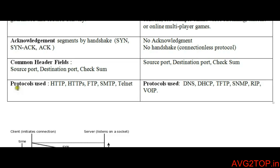Protocols used for TCP include HTTP, HTTPS, FTP, SMTP, and Telnet. HTTP is responsible for browser internet access, FTP is the file transfer protocol, SMTP is the Simple Mail Transfer Protocol used for transferring emails, and Telnet is for remote access. For UDP, the protocols used include DNS and DHCP. DNS is the Domain Name System and DHCP is the Dynamic Host Configuration Protocol, which we will see in detail in our next videos.